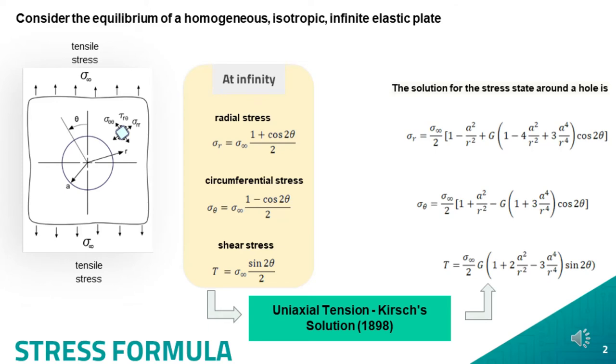Considering the equilibrium of a homogeneous isotropic infinite elastic plate, whereby all the stresses are uniform. At infinity, radial stress, circumferential stress, and shear stress formulas are stated in the middle of this slide, where derivation of this formula into a uniaxial tension, which is known as Kirsch solution in 1898, gives us the formulas as stated in the slide at the right-hand side.